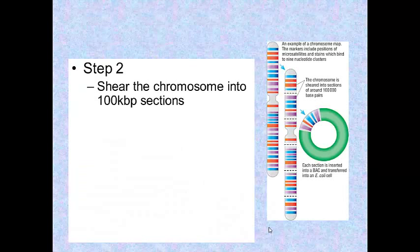Step 2 - and really this is the first time we break the thing up - shear the chromosome into 100 kilobase pair sections. Those are pretty big sections, 100,000 base pairs, and this is often done by sonic shattering that can just blast the thing apart with sound energy.